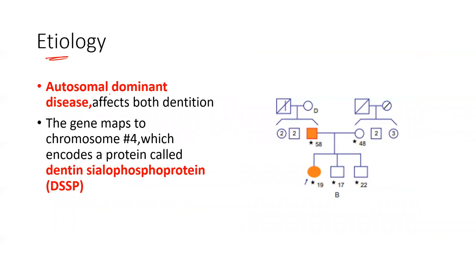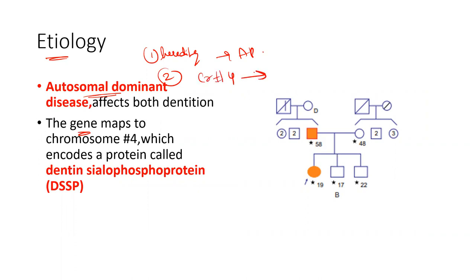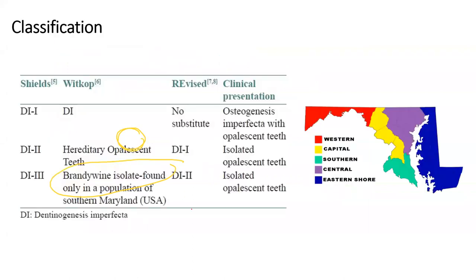The etiology is autosomal dominant — it is a hereditary condition. A very important point is that the gene maps to chromosome number four. This gene encodes for a protein called dentin sialo-phosphoprotein, or the DSSP protein. So the key point is: gene maps to chromosome number four, encoding for dentin sialo-phosphoprotein.